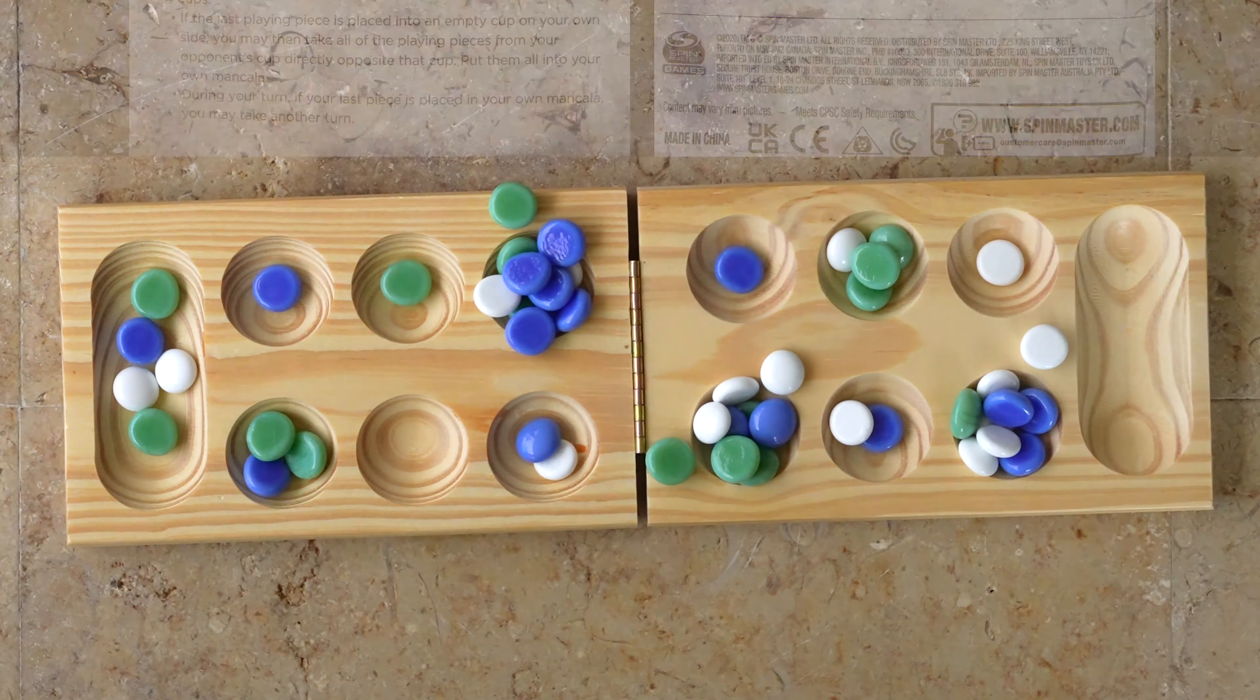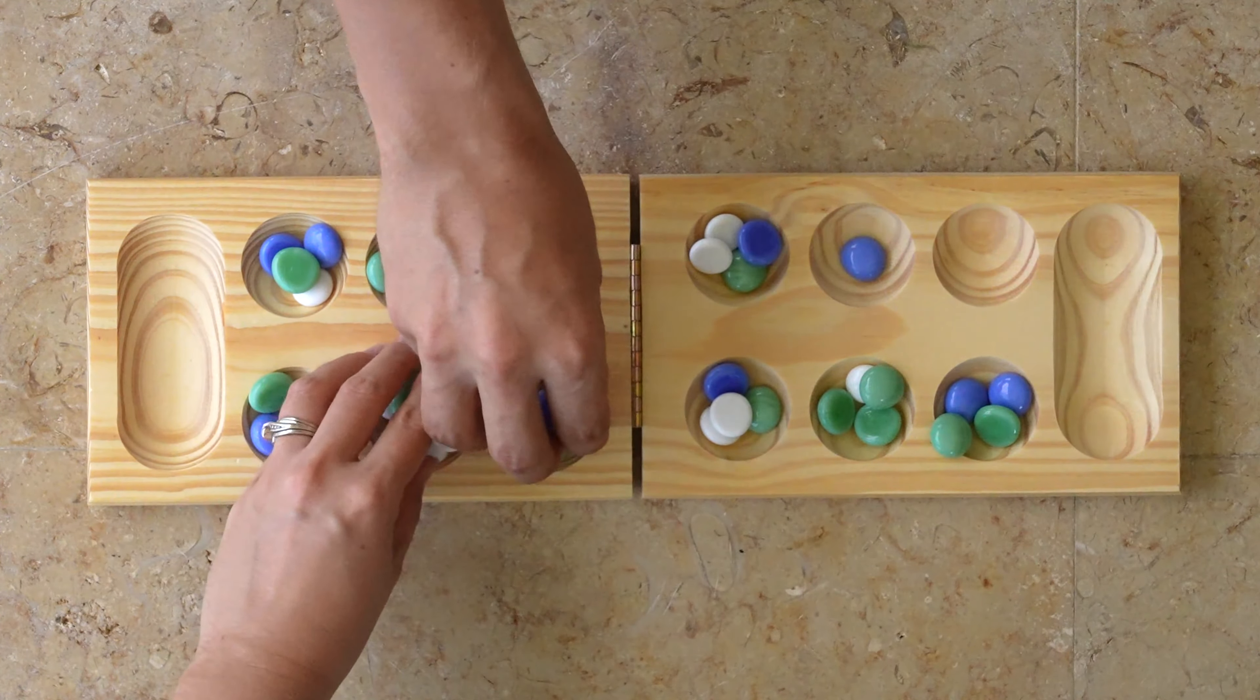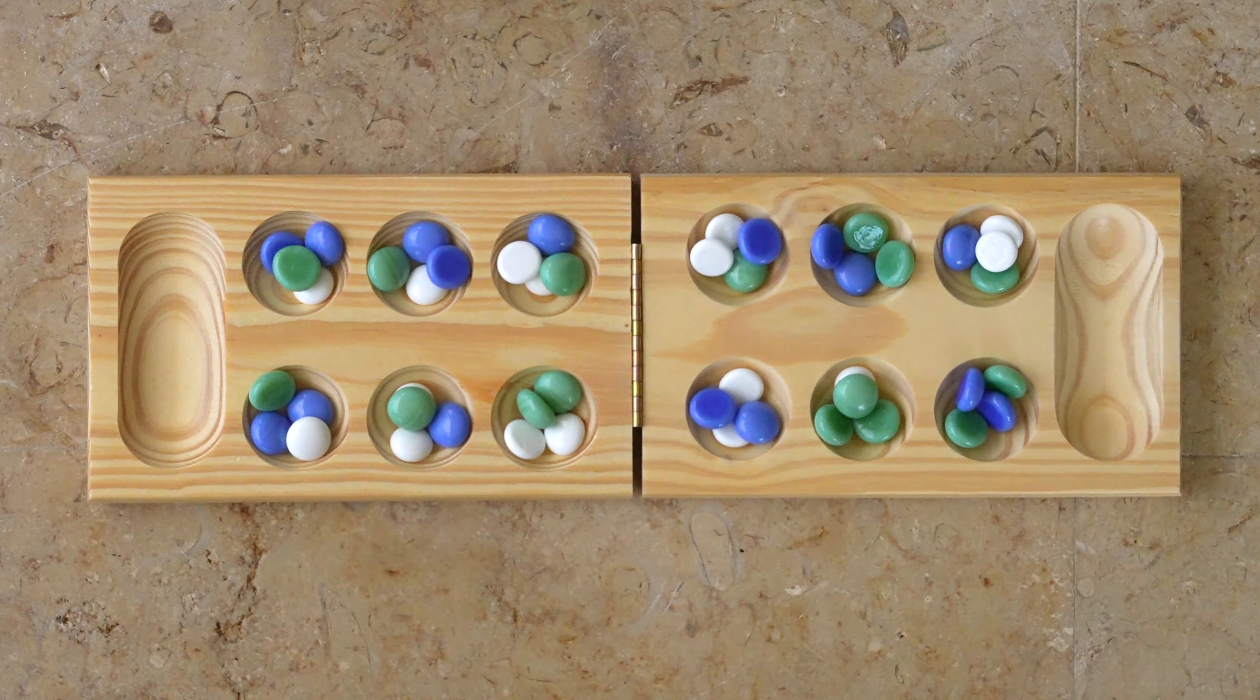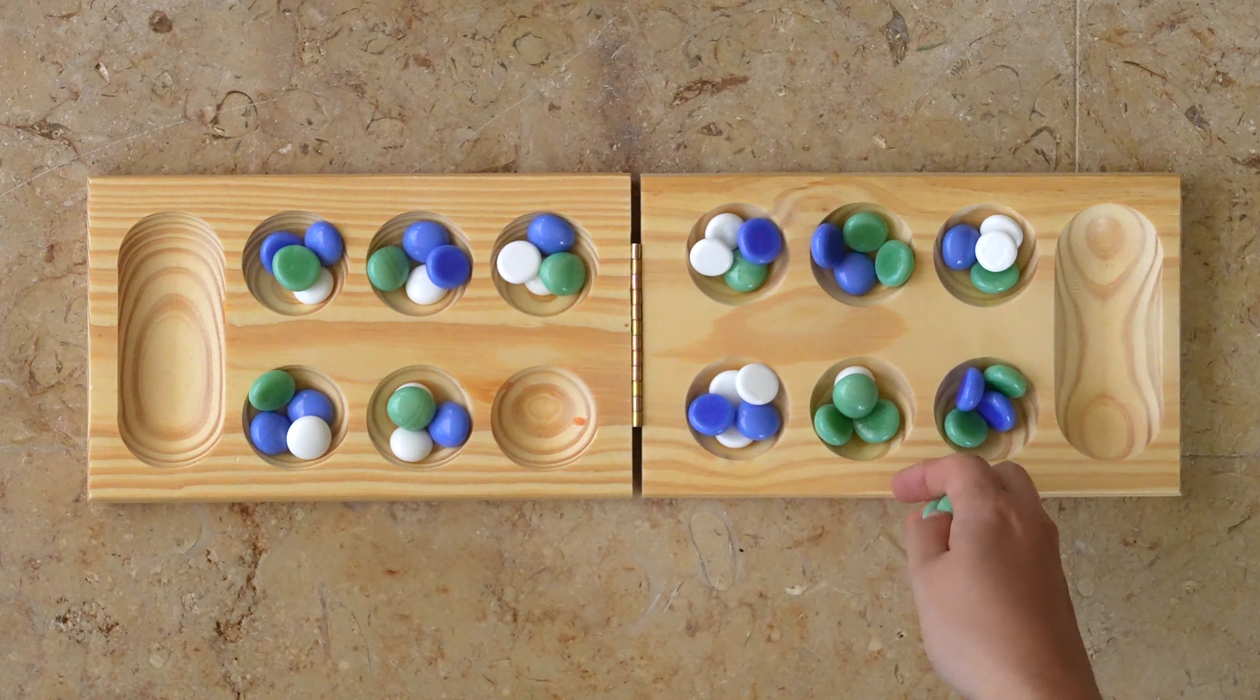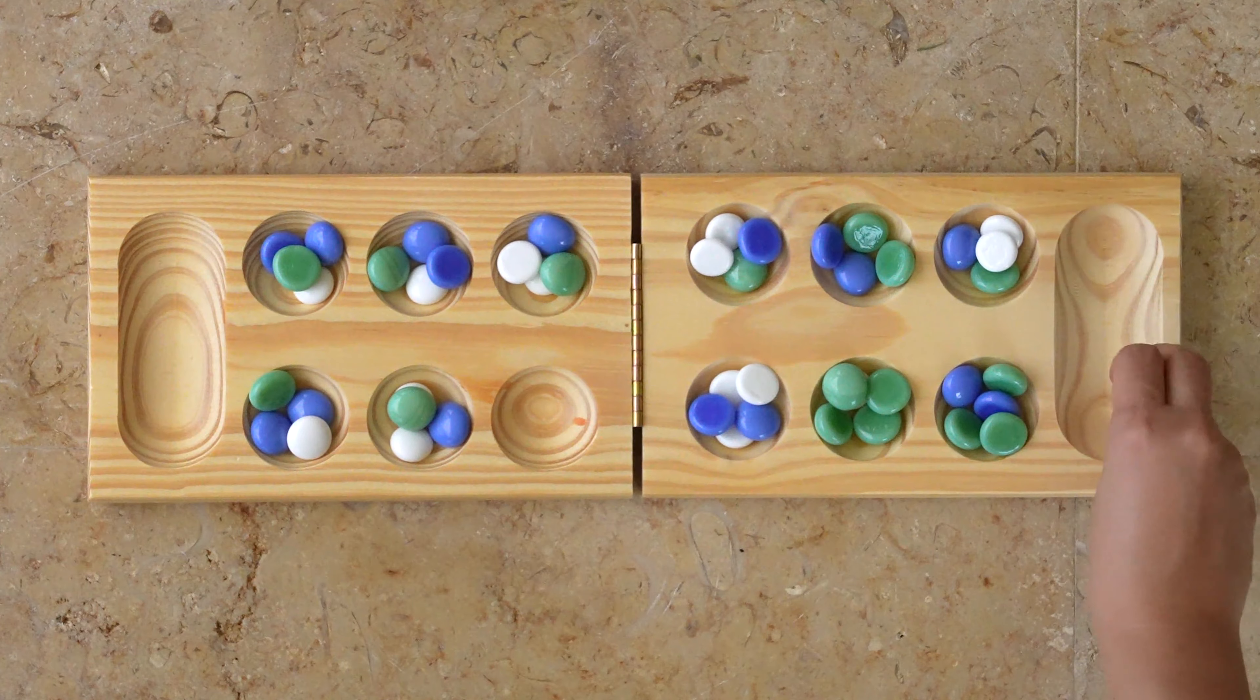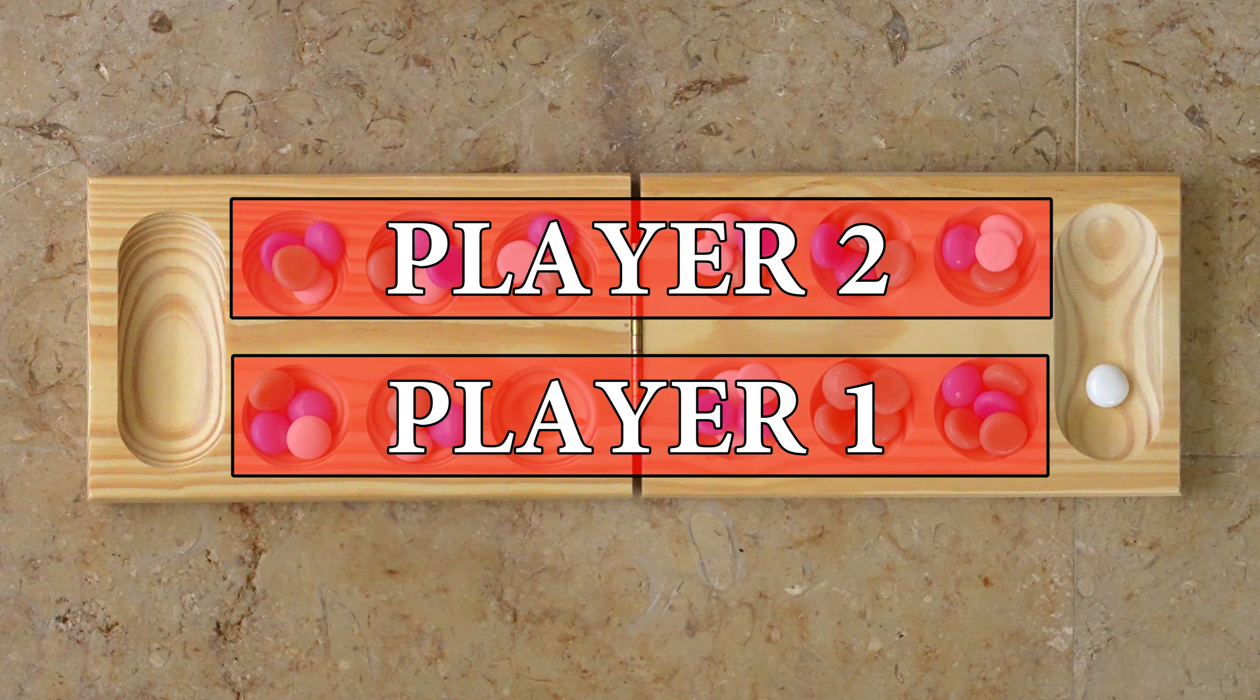Allow me to show you how Mancala is really meant to be played. Start by putting 4 marbles into each small cup. Players then take turns choosing a cup and moving the pieces in it counterclockwise, putting one marble in each cup. Each player can only start moving pieces from their side of the board.